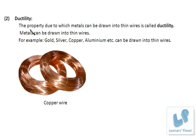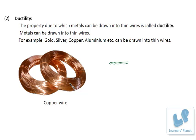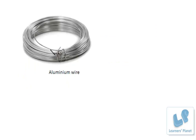The second property is ductility. The property due to which metals can be drawn into thin wires is called ductility. This is a copper wire — you must have seen this. Gold, silver, copper, and aluminium can all be drawn into thin wires. Whereas non-metals do not have this ductility property. The property by virtue of which metals can be drawn into thin wires is called ductility, and the property by virtue of which metals can be beaten into thin sheets is called malleability.